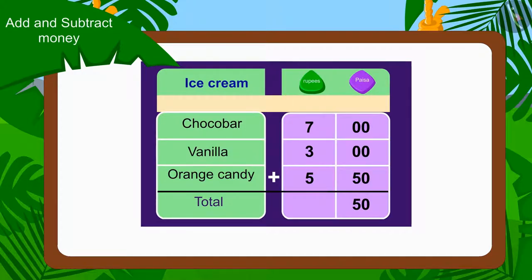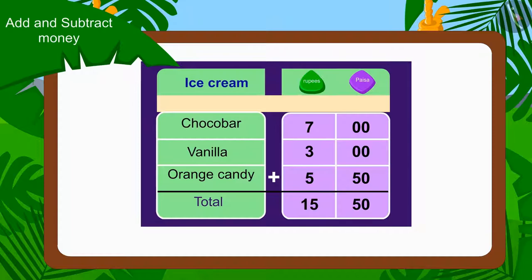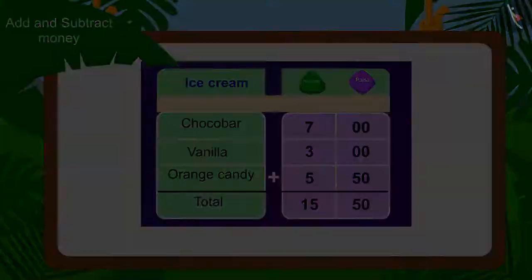Then we will add all the rupees. What is the total amount? Yes, 15 rupees. In this way, Raju and Bablu will have to pay 15 rupees 50 paise to Babban.